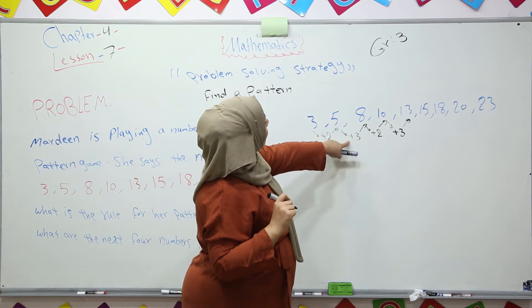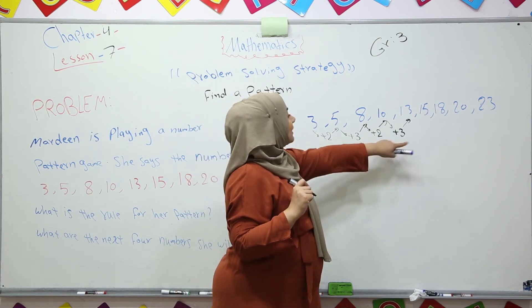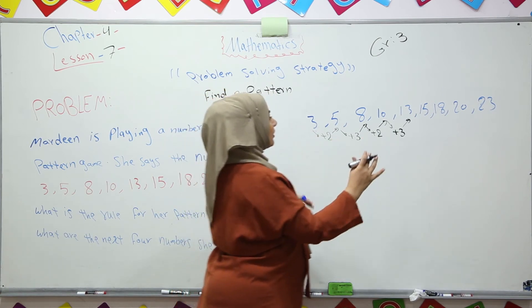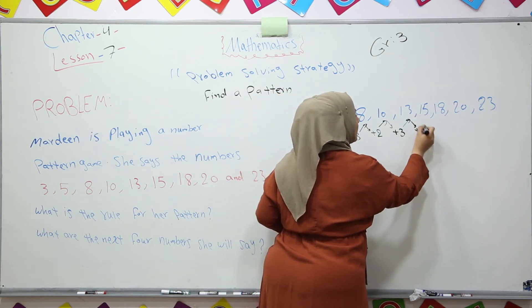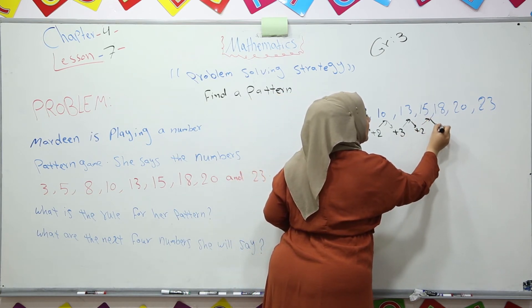So look at it. First, we add two numbers, then we add three numbers. Two numbers, three numbers. So it is double. Add two numbers, then add three numbers.